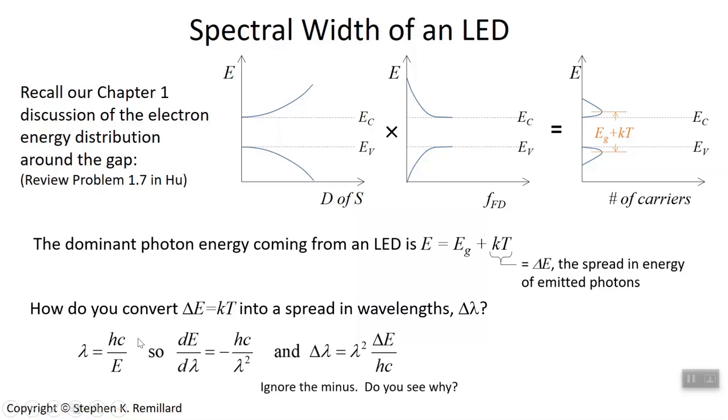Pause if you need to to see that. I'm going to ignore the minus sign here simply because these are like widths, dE and d lambda. A negative width makes no sense. All the minus sign is telling me is that a graph of energy versus lambda has a negative slope.